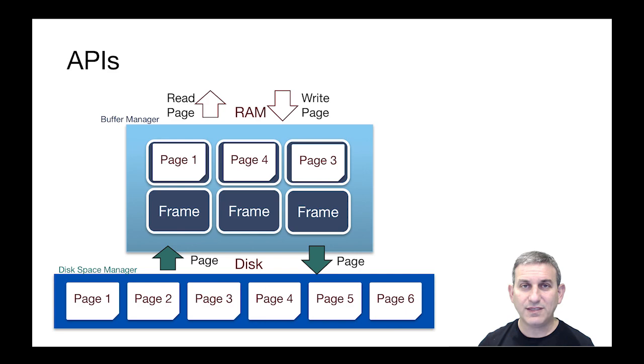The API at the two layers is fairly similar. The API to the buffer manager is going to be to read and write pages, and the API to the disk drive was also to read and write pages. But of course in RAM things are more addressable once you get them there in terms of addressing specific bytes within the page.